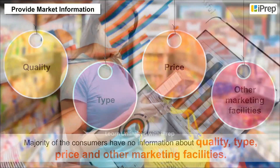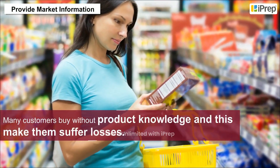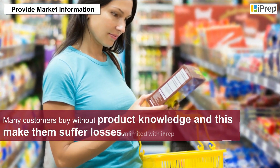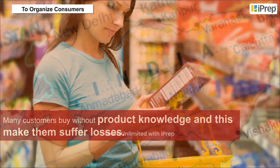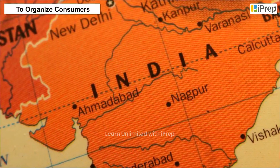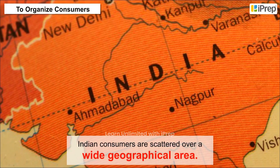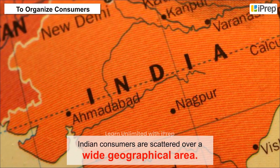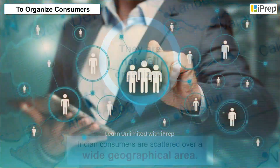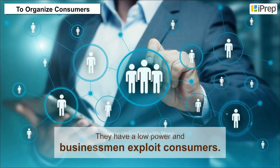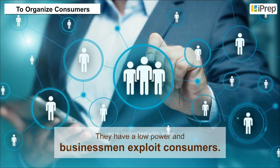Provide market information: the majority of consumers have no information about quality, type, price, and other marketing facilities. Many customers buy without product knowledge and this makes them suffer losses. To organize consumers: Indian consumers are scattered over a wide geographical area, they are not well organized, they have low bargaining power, and businessmen exploit them.